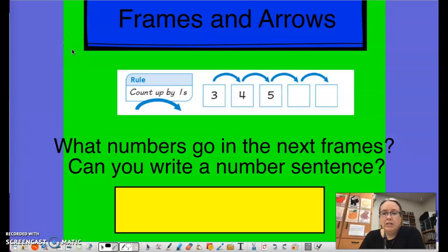All right guys, so today we are going to talk about something called frames and arrows. And essentially what it is, if you look here, you're always going to see a rule. You're going to see some shapes. These ones happen to be squares with numbers in it. We call those the frames.